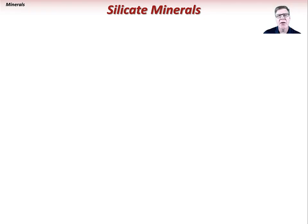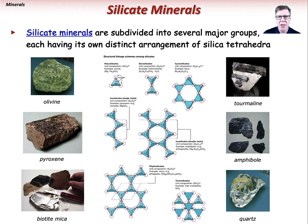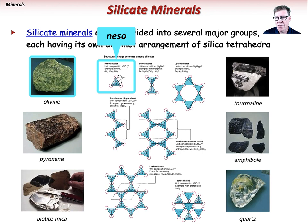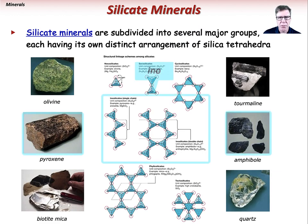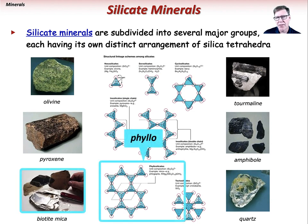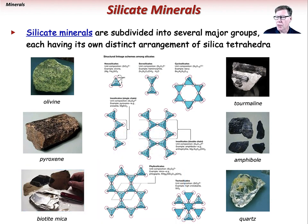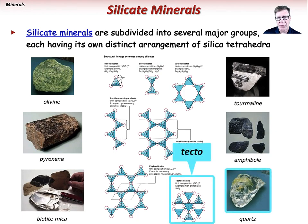The silicate minerals are subdivided into several major groups, each having its own distinct arrangement of silica tetrahedra. Structures composed of isolated tetrahedra are termed nesosilicates — the simplest structures. They progressively become more complex and include rings or cyclosilicates, single and double-chained silicates termed inosilicates, sheet silicates also called phyllosilicates, and three-dimensional framework silicates or tectosilicates.